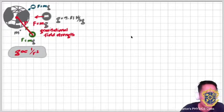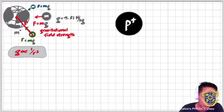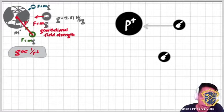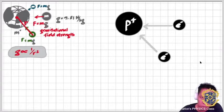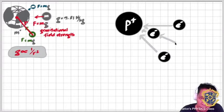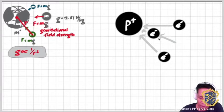That idea is similar to what we can use in the discussion of the electric field. Imagine we have a positively charged particle and a negatively charged particle. The negative particle is being pulled towards the positive with some amount of force. Other negative charges around the positive charge will also experience a force directed inward — always toward the positive charge.